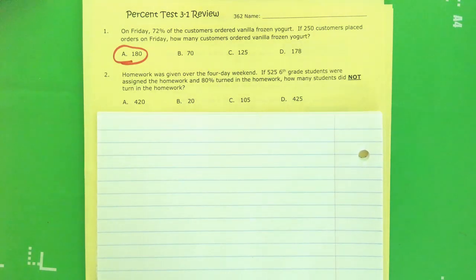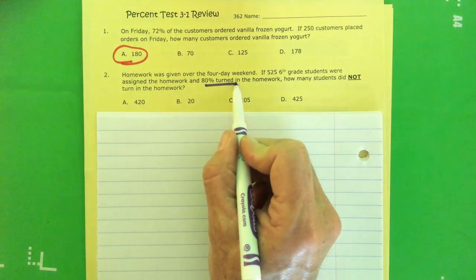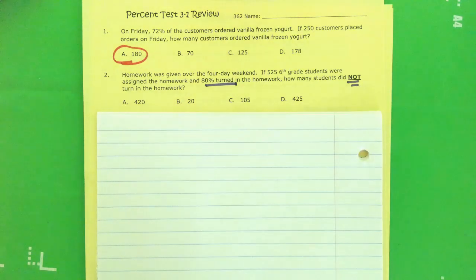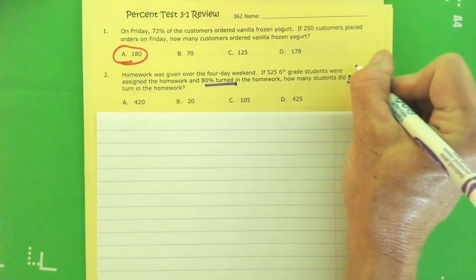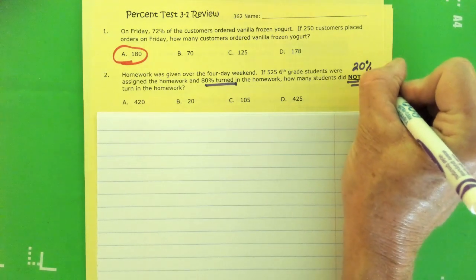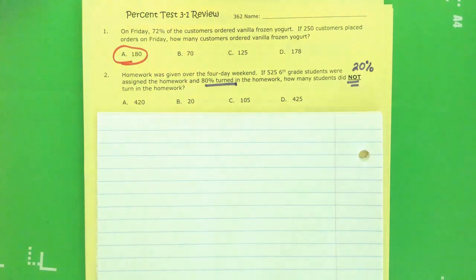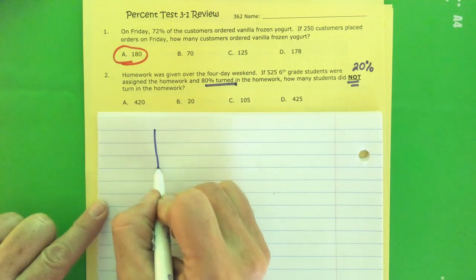Homework was given over the four-day weekend. If 525 sixth grade students were assigned the homework and 80% turned it in, how many students did not turn it in? Here's where you need to be careful. 80% turned it in out of 100. That means 20% did not turn it in. They're looking for that 20%. So I'm going to use the 20% to help me solve it.